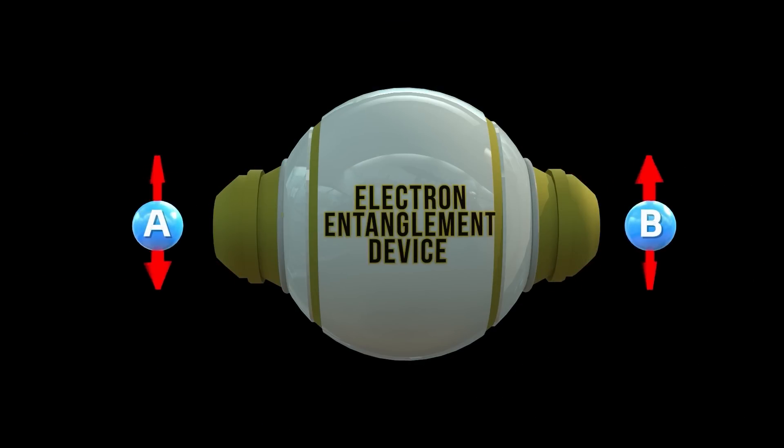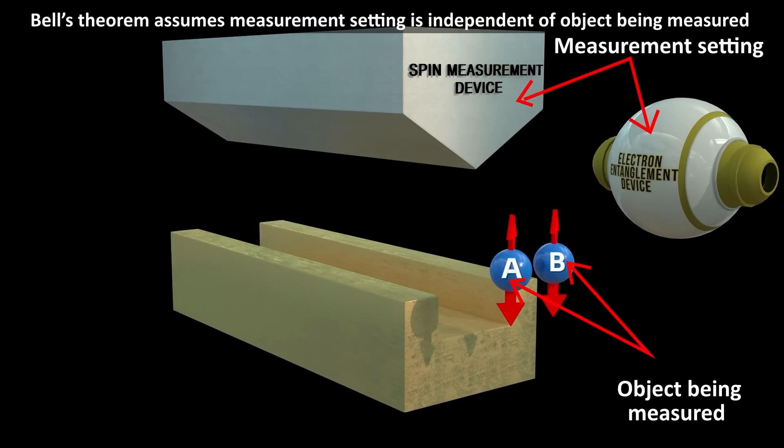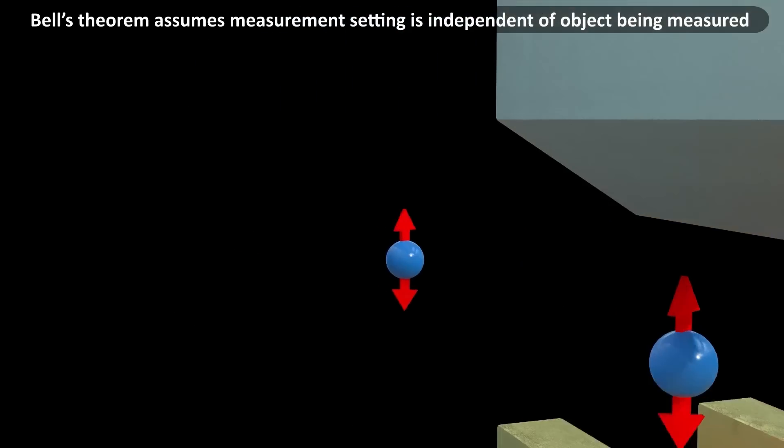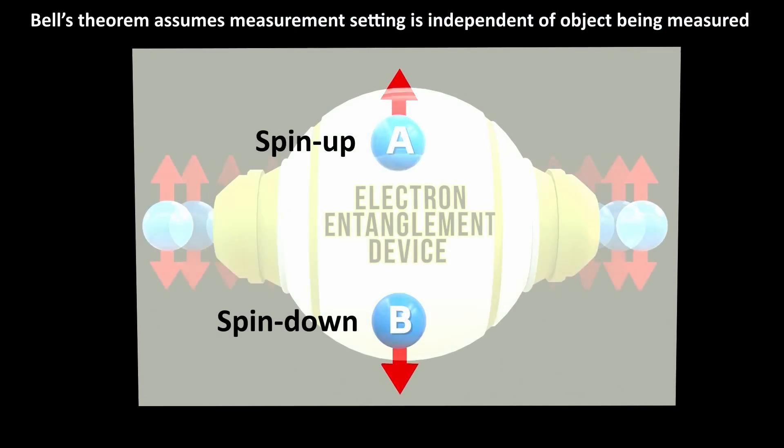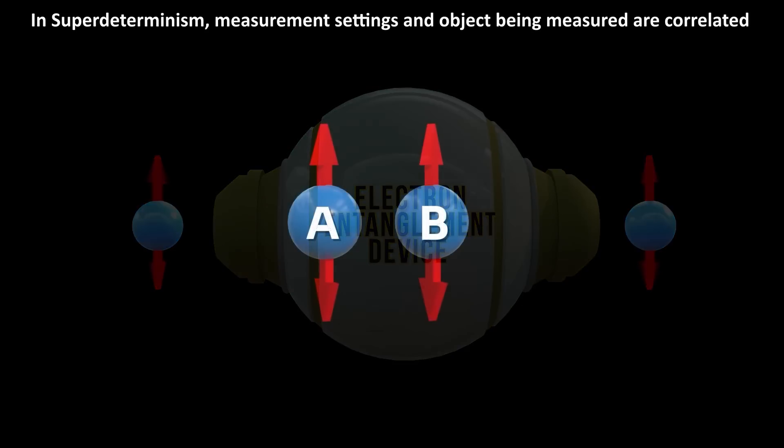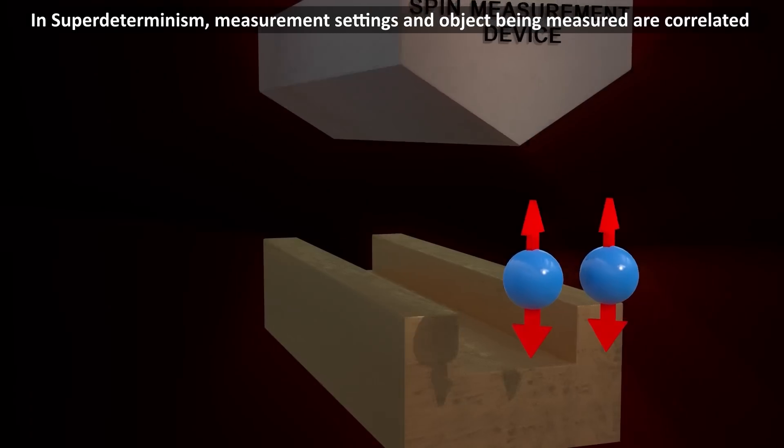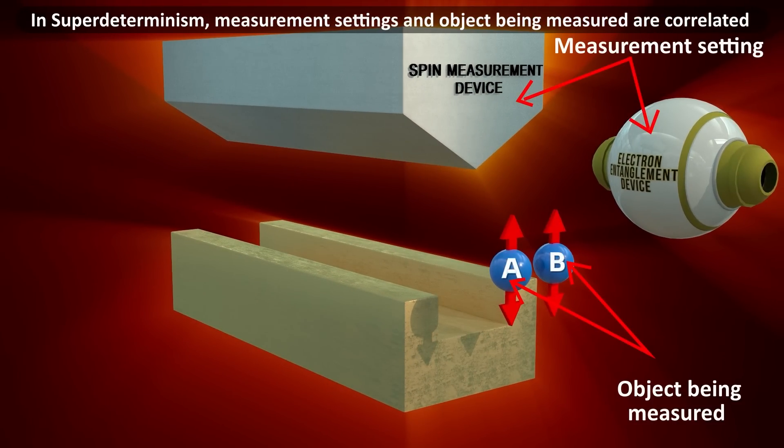Bell's theorem, like most experimental setups, assumes that the measurement setting as well as the choice of what to measure are independent of the object being measured. This relation is referred to as measurement independence, or statistical independence. In a super-deterministic theory, this independence is not there. This allows super-determinism to exploit a loophole in Bell's theorem. The assumption in the theorem is measurement independence. But since in super-determinism, this independence doesn't exist, the restriction that local hidden variables cannot exist would not apply.